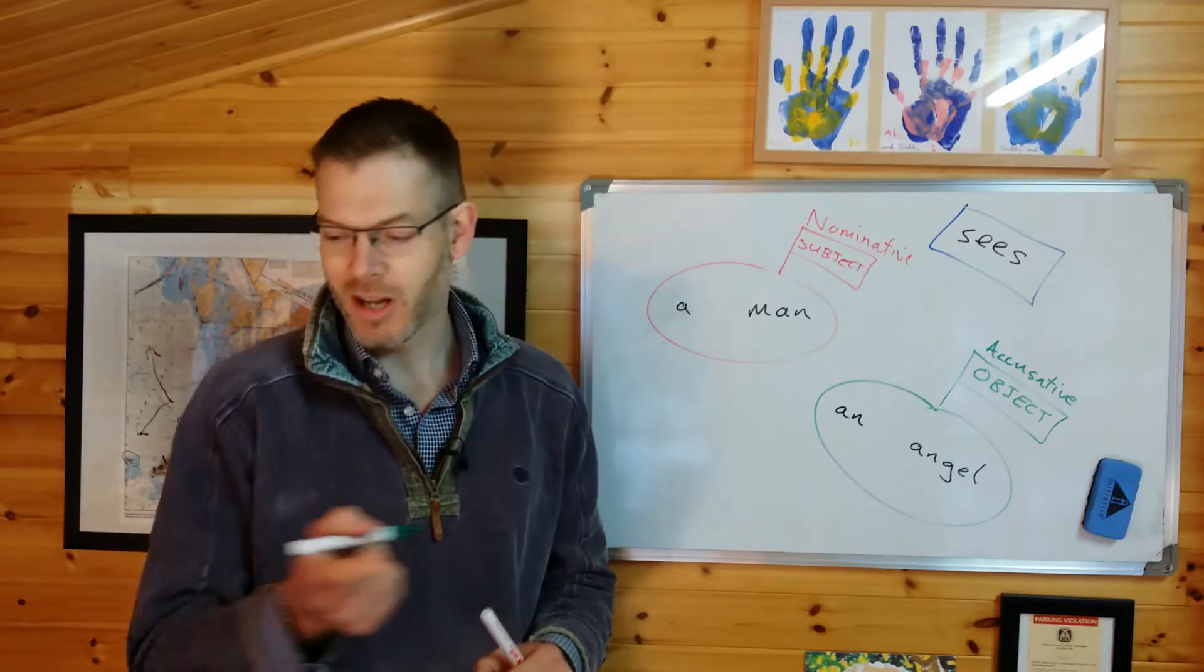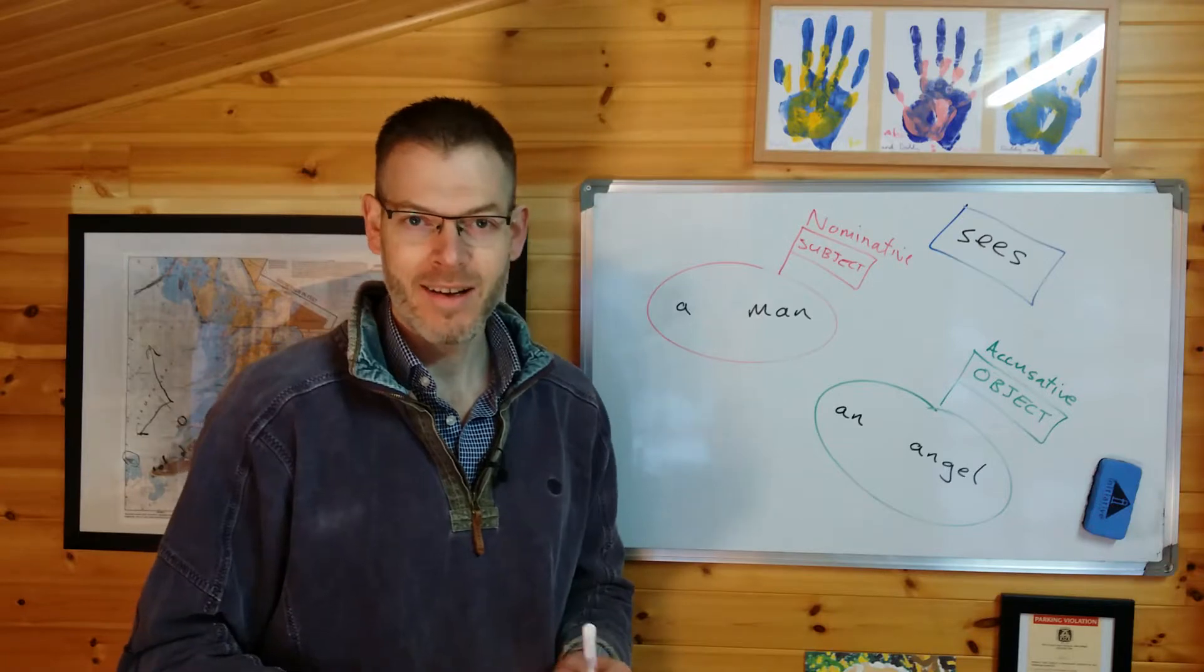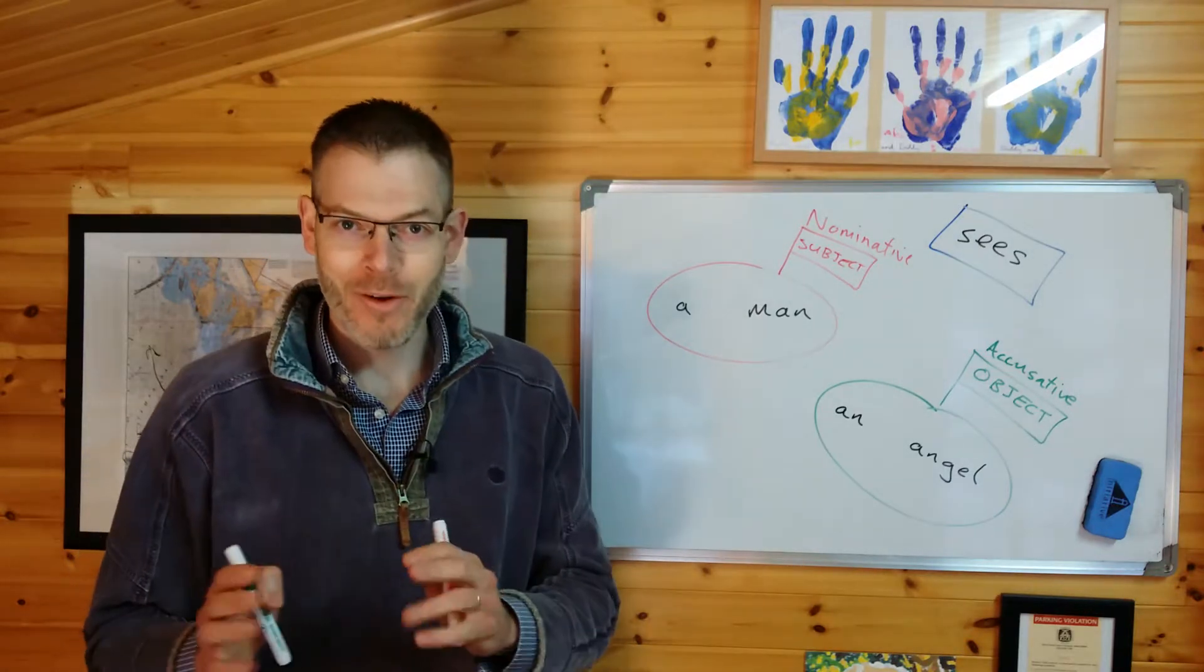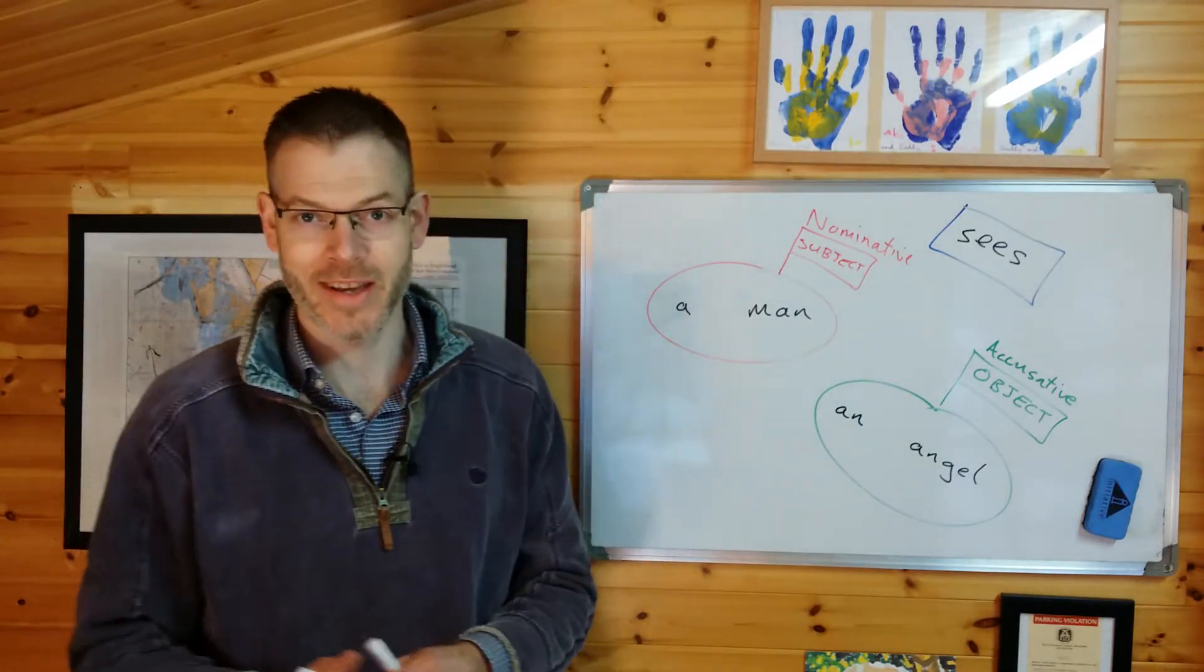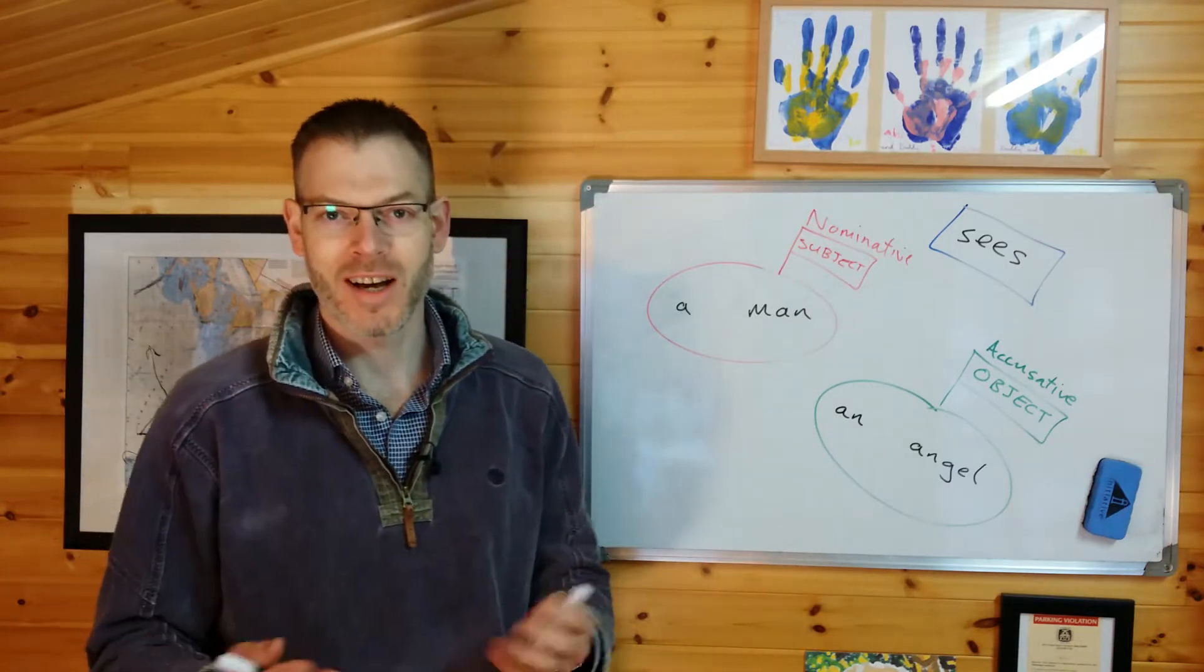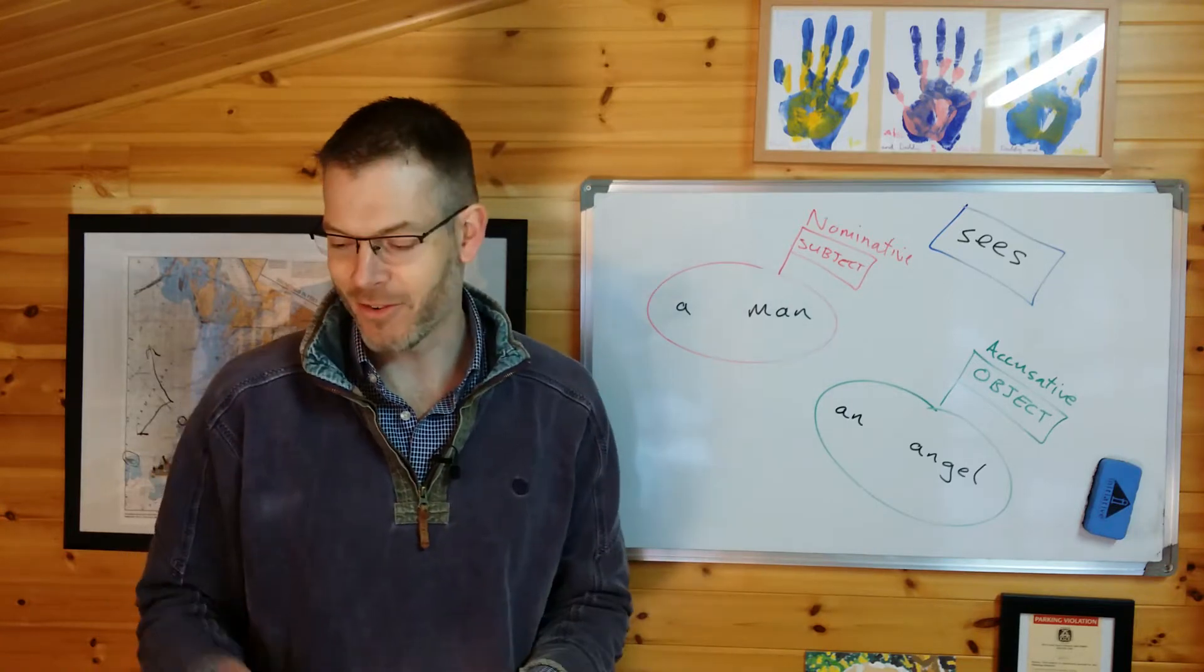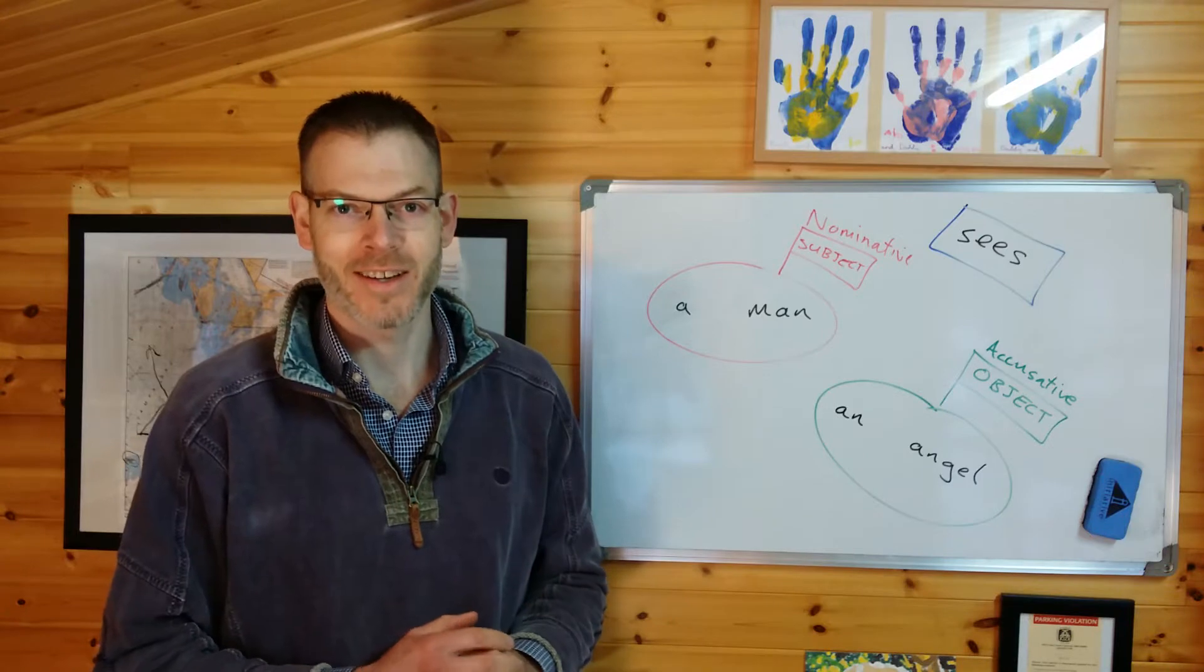Now, in the next video, we'll come back into section 2.3 and I'll show you what these labels are. You can read it for yourself. You need to be reading along with me and that will then help us to see how this structure works in Greek. And we'll come back to this example of a man sees an angel and we'll start to see how you can change the subject and the object around using the case endings that Duff has shown you.